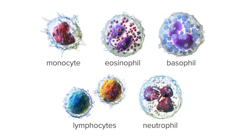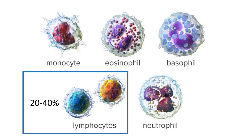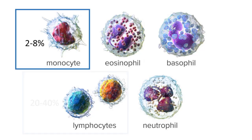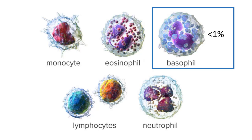You should know the five types of white blood cells from most numerous to least: "Never let monkeys eat bananas." Neutrophils make up over 60% and are the first responders in an acute situation. Lymphocytes (B and T cells) make up 20–40%. Monocytes are 2–8% in the blood and become macrophages in tissues, increasing during chronic infections. Eosinophils are less than 4% and basophils less than 1%.